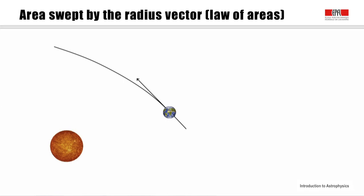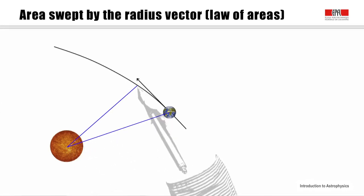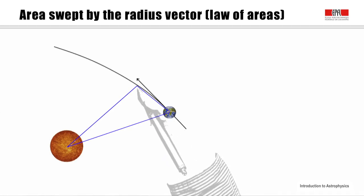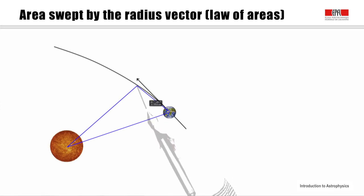Kepler's second law tells us that the radius vectors sweep out equal areas during equal intervals of time. Here is a small surface element between two instants. While the Earth moves along its orbit, we have a triangle with its altitude here. We now seek to compute this area.